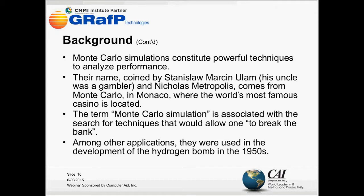The name comes from two scientists: Stanislaw Marcin Ulam, whose uncle happened to be a gambler, and Nicholas Metropolis. They named the technique Monte Carlo in honor of Ulam's uncle because he was a gambler — and of course, Monte Carlo is probably the world's most famous casino.